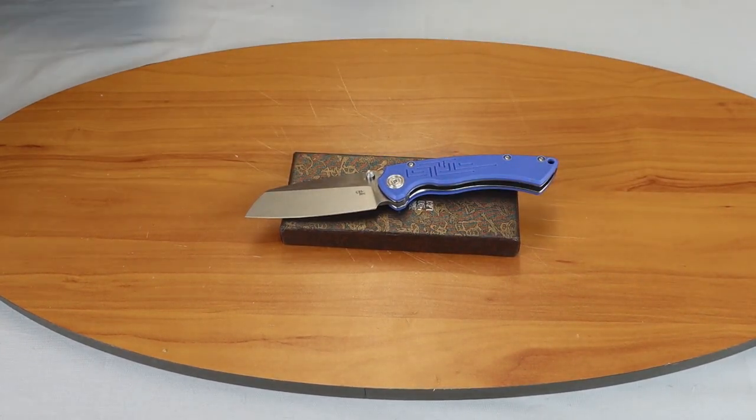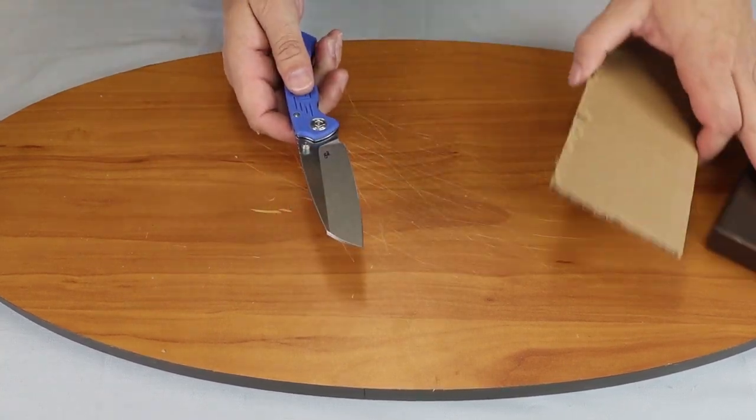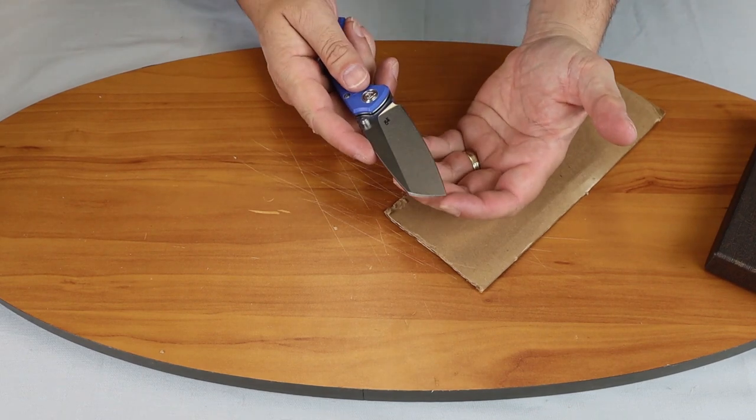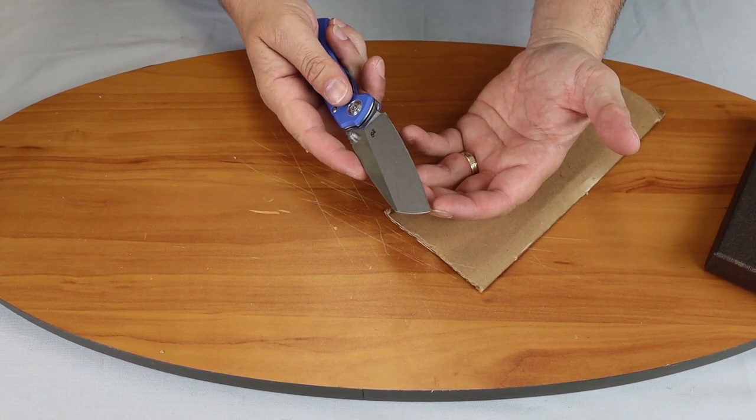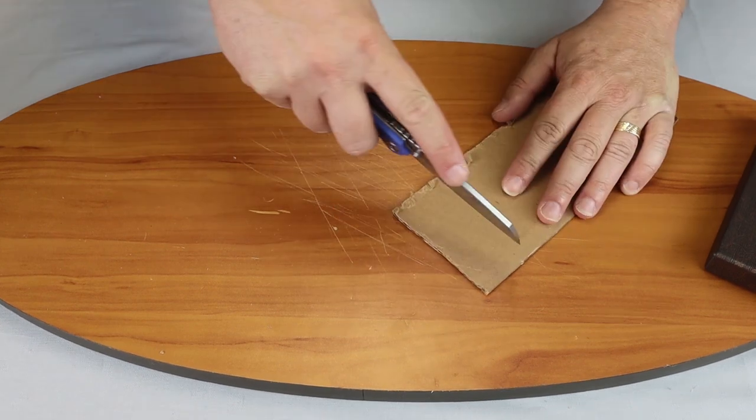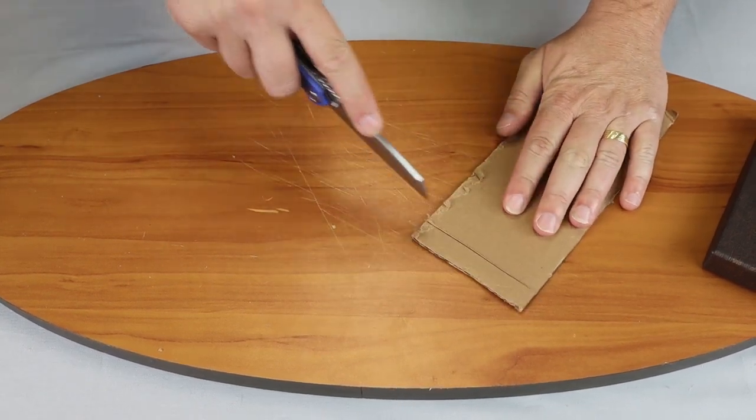We'll grab some cardboard. Slide that over. I want to see how the tip cuts. This one does look like it will have a fairly decent cut to the tip. It is fairly sharp looking. Let's go ahead and see.